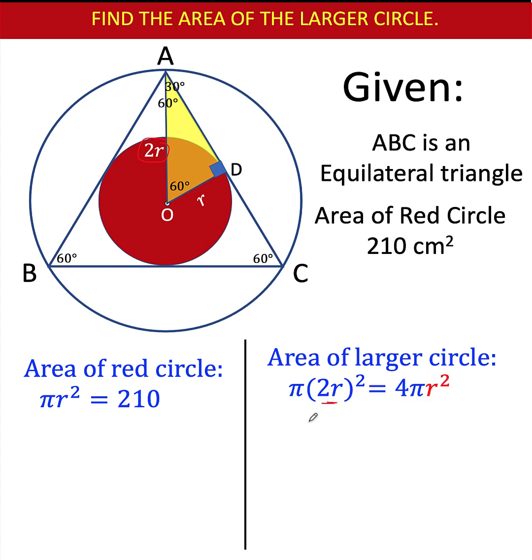Simplifying, this is equal to 4πr², because 2² is 4, r² is this red r², and we just copy the π. 4 is a constant, π is a constant. If we can find the value of r², then we already know what is the area of the larger circle.